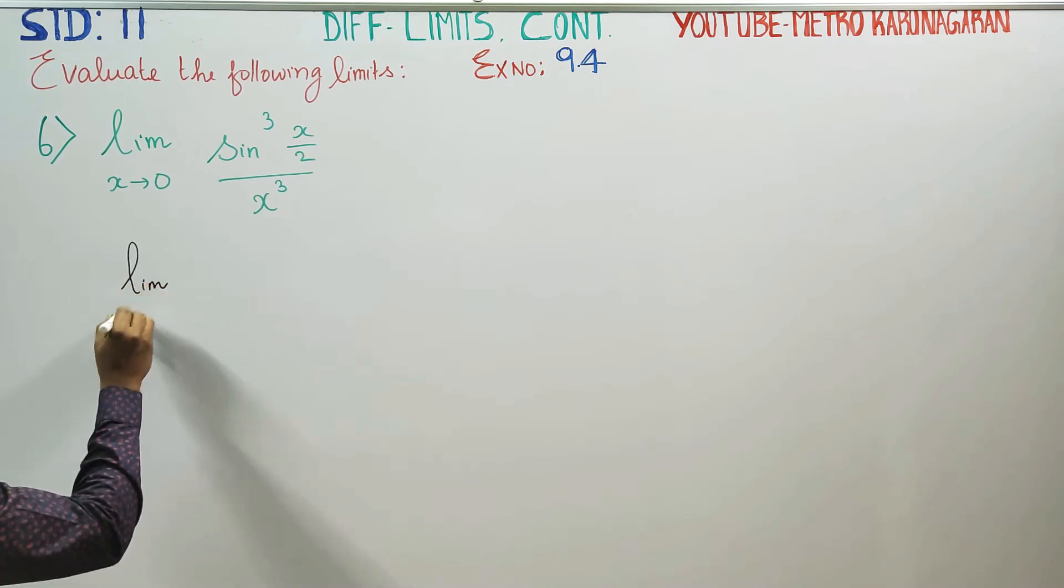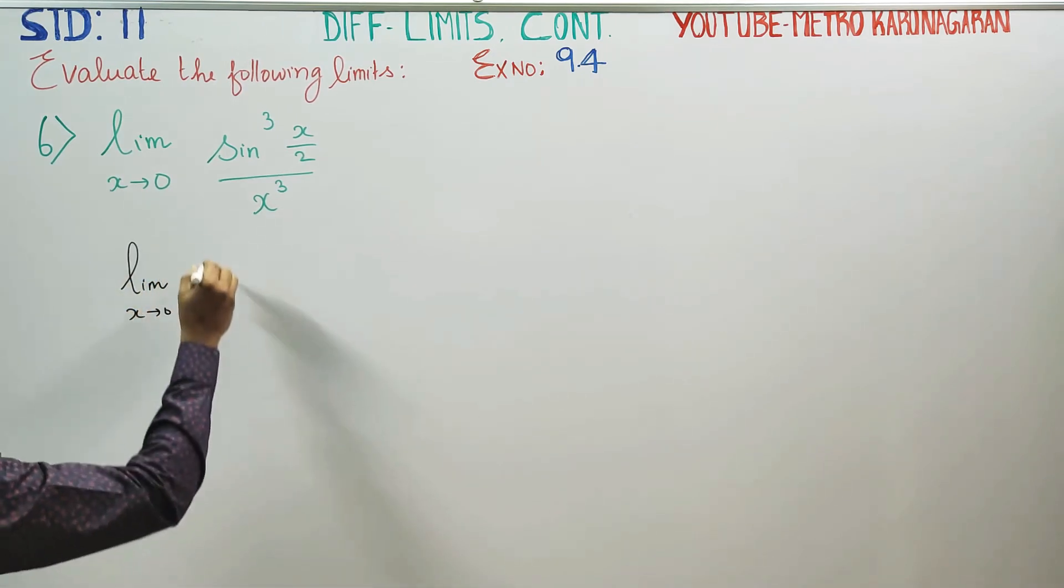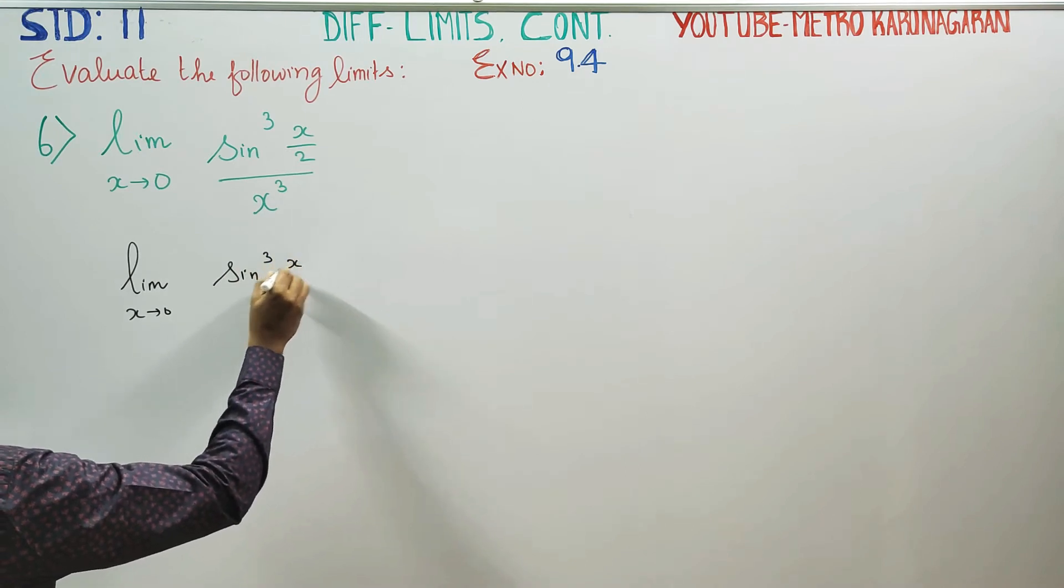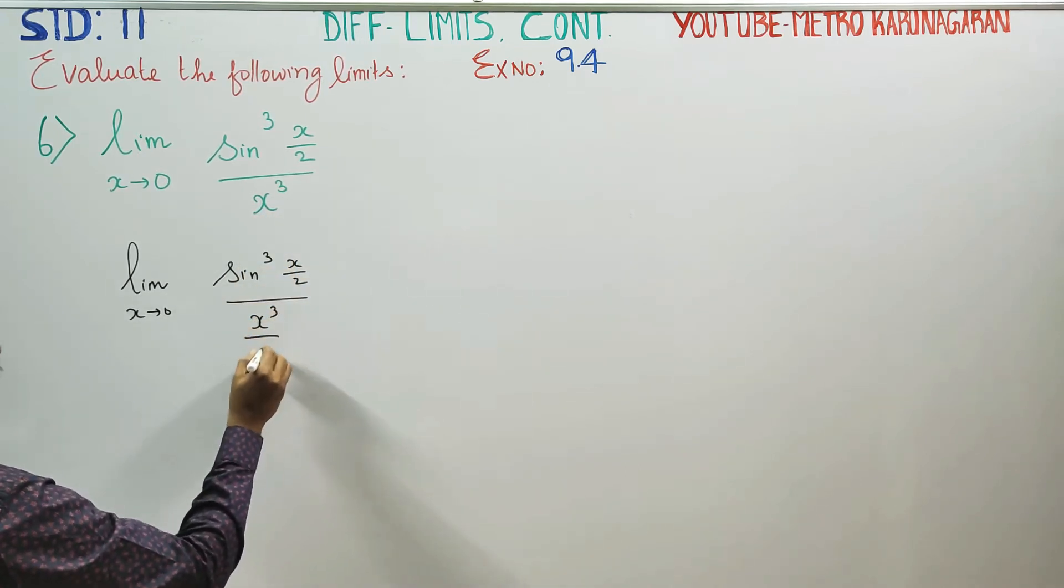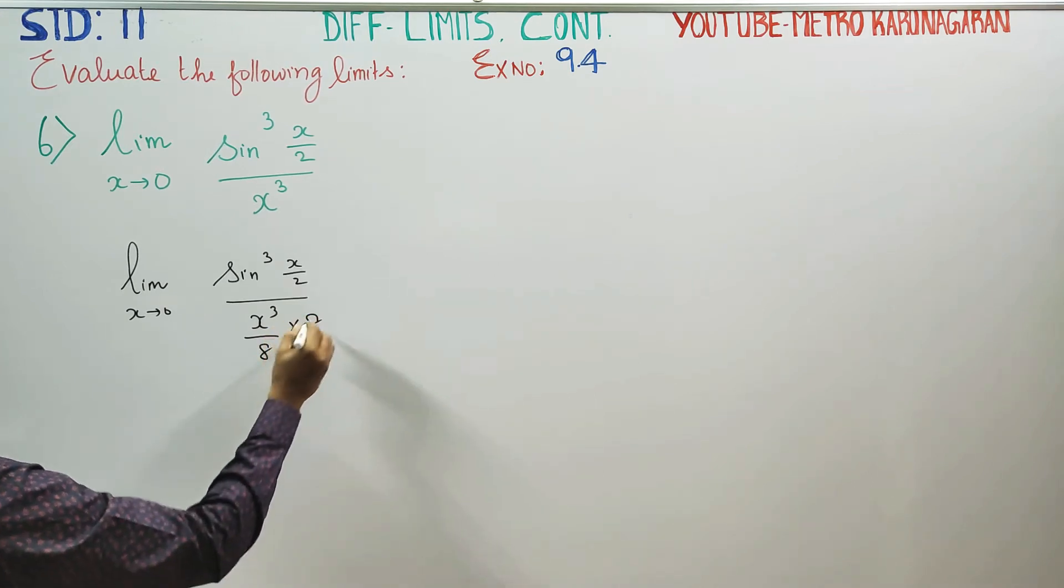Limit x turns to 0, this can be written as sin³(x/2) divided by x³/8 times 8. Multiply and divide by 8.